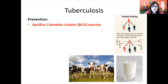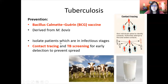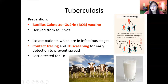Prevention is always better than cure. We have the BCG vaccine, which works really well and is compulsory in Malaysia. The BCG vaccine keeps us safe from TB and is actually derived from M. bovis. We'll talk more about vaccines in the next chapter. To prevent spreading, patients in infectious stages should be isolated and kept away from everyone else. If possible, trace people who were near them, test them for TB, and ensure early detection to prevent further spread. For cattle safety, they are also tested for TB, and milk is pasteurized so that M. bovis does not spread.